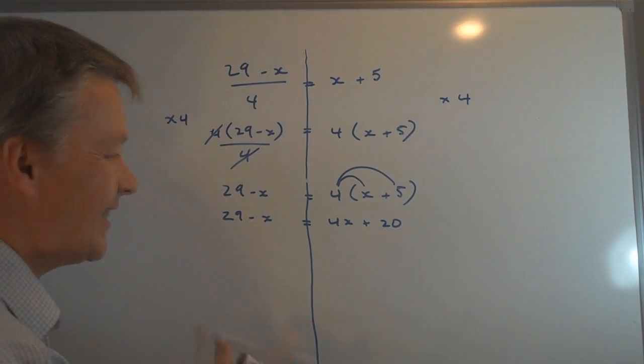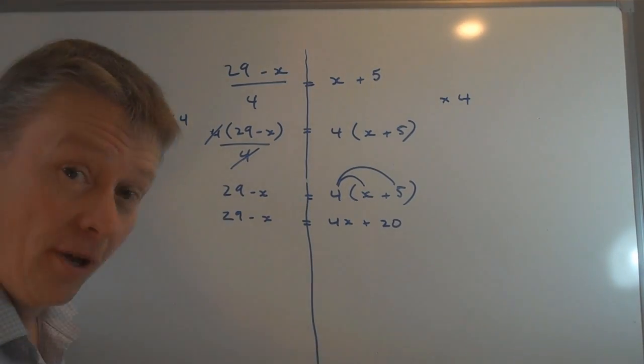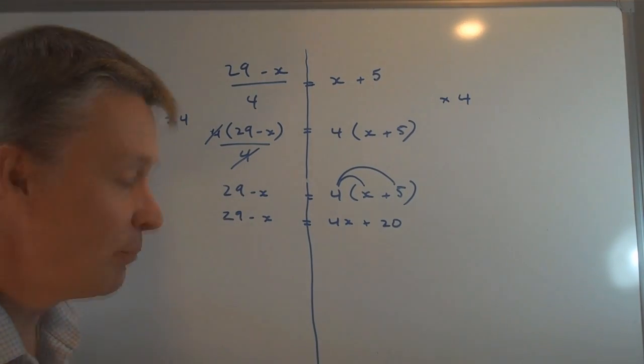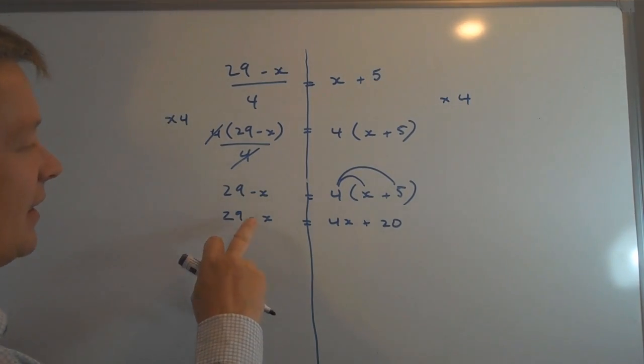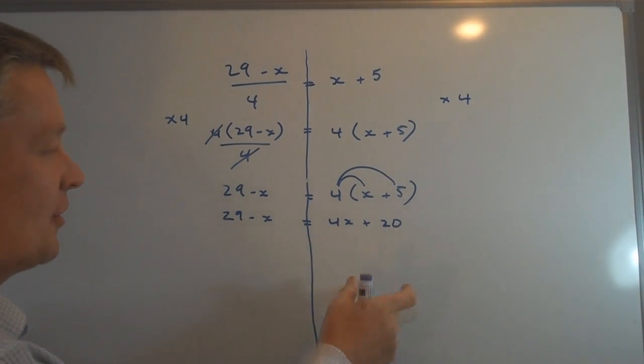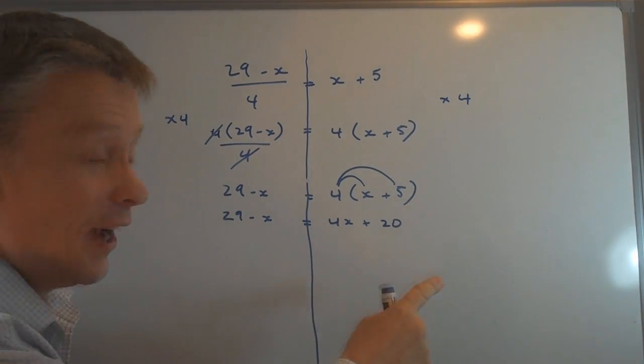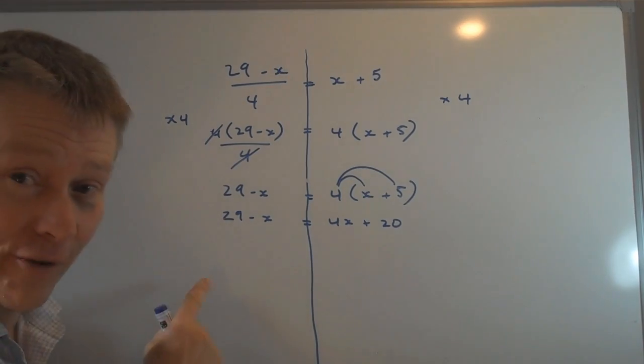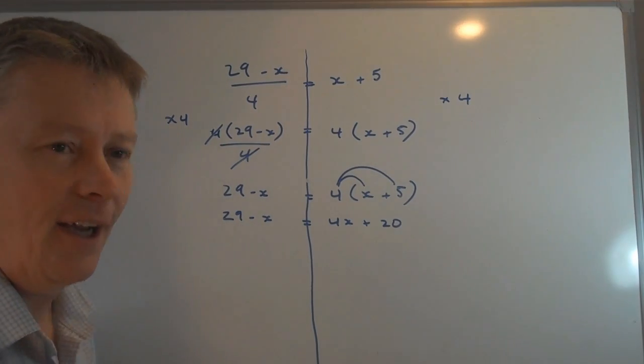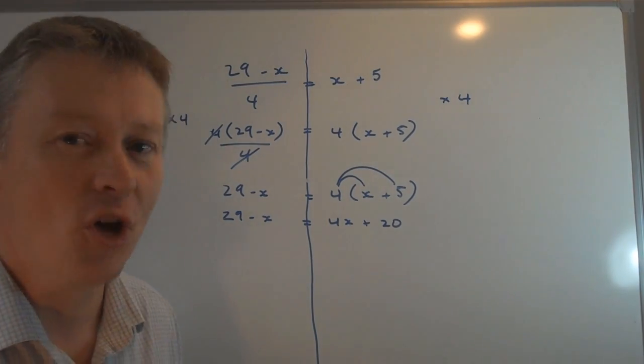Okay. So ideally, I need to be in a position where I've got x on one side and numbers on the other. Now, it doesn't really matter which way around I do it. But I can either add x to this side and add x to this side, so I get 5x on that side. Or I can take 4x away from this side and 4x away from this side, and I'm going to get -5x on this side. It's probably easier not to deal with negative numbers if you can avoid them.